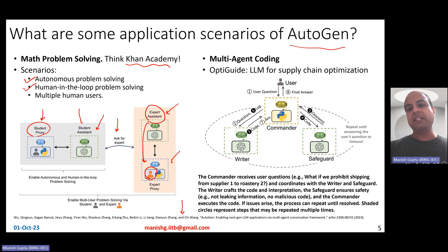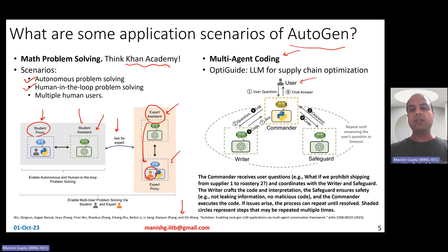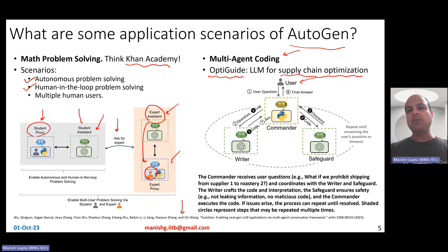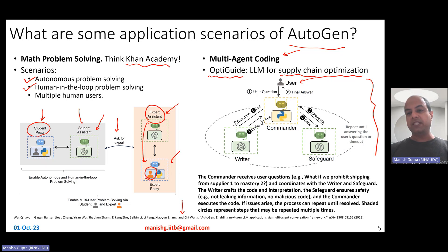Another application scenario is multi-agent coding. Autogen helps LLMs solve supply chain optimization kind of difficult problems. There is a nice GitHub repository called OptiKide which already has code prompts and everything written to have LLMs solve supply chain optimization problems. Autogen works on top of it and helps write code that is much faster, more optimized, and more accurate.